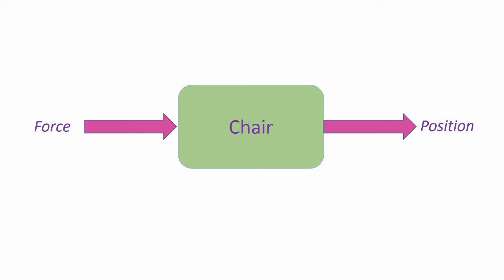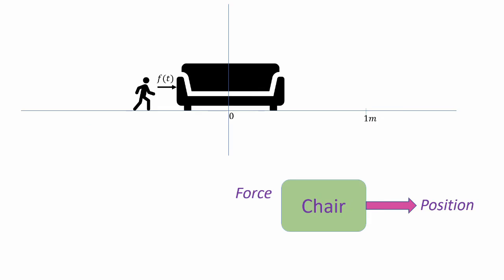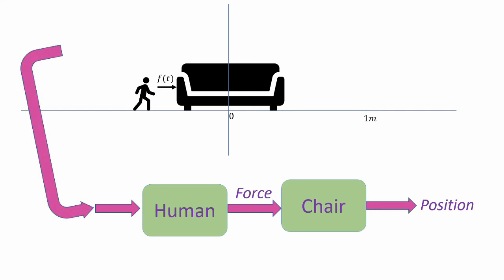We can expand the block diagram further by including the person himself. The person is producing the force based on his desire to move the chair to a particular position. So the actual input can be said to be his desire to move the chair, and he will produce a force which will then move the position of the chair. Here, the input is his desire to move the chair and the output is the position of the chair.